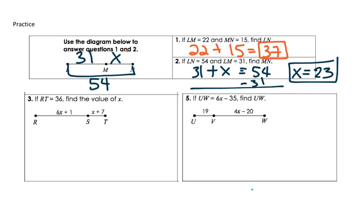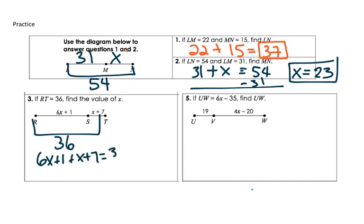Number 3: if RT is 36, what is the value of X? Take RS plus ST and set it equal to RT, which is 36. So 6X plus 1 plus X plus 7 equals 36. Combine like terms: 7X plus 8 equals 36. Subtract 8 from both sides: 7X equals 28. Divide by 7 and X equals 4.